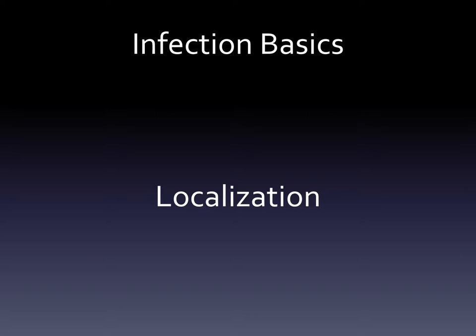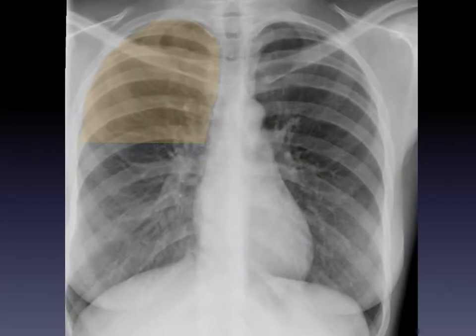Before I introduce you to the different types of infections that we will see by chest radiographs, we have to talk a little bit about figuring out where the infection is. This is a really common topic when we talk about radiographs. If we see increased whiteness towards the top of the lungs on either side, we can be pretty sure this is in the upper lobe on that side.